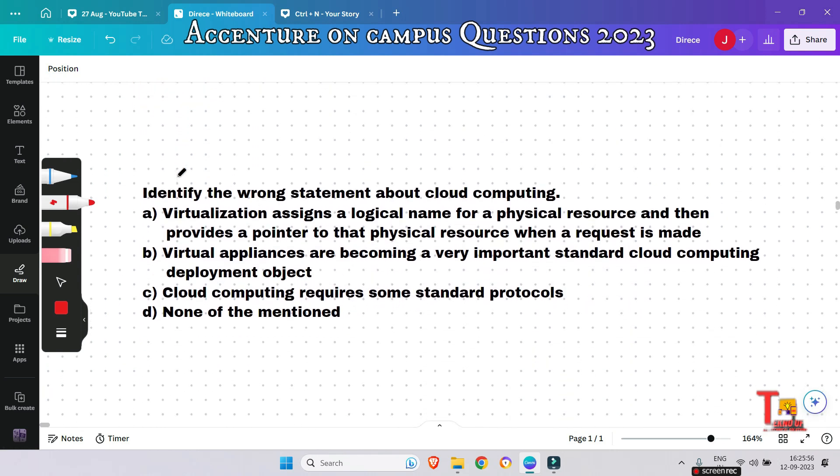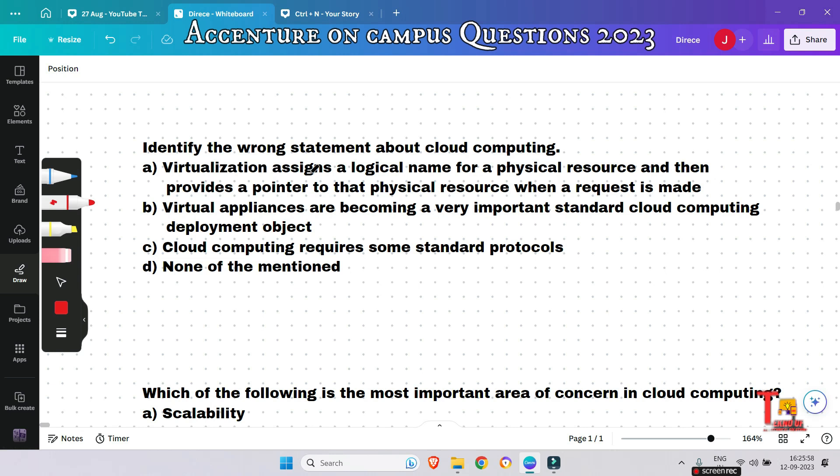The next question is: Identify the wrong statement about cloud computing. A) Virtualization assigns a logical name for physical resources and then provides a pointer to that physical resource when a request is made. B) Virtual appliances are becoming a very important standard cloud computing deployment object. C) Cloud computing requires some standard protocols. What will be the correct option?